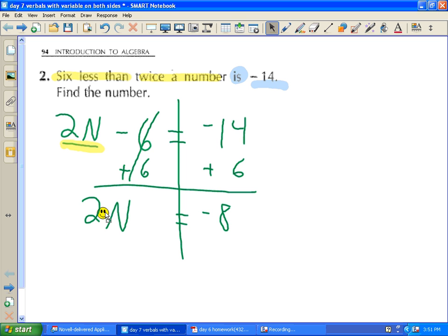The N is not by itself. 2N means 2 times N. I get rid of multiplication by dividing both sides by two. N equals negative four.